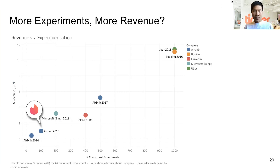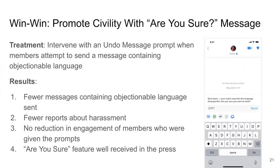Here's a great example of an experiment — a win-win where we promote civility with an 'Are You Sure' message. We tested a treatment where we intervene with an undo message prompt when members attempt to send a message containing objectionable language. Results showed fewer messages with objectionable language were sent, fewer harassment reports were received, and there was no reduction in engagement among members who received the prompts. This feature was also well received in the press.